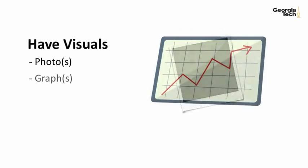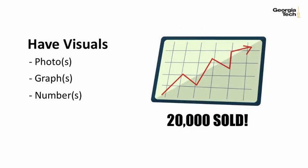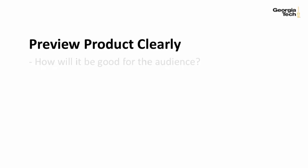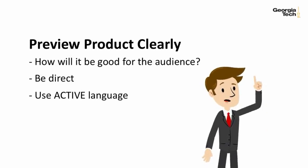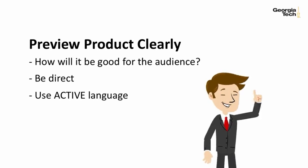Include a strong visual — a photo, a graph, a number — that will help your audience connect to you and your product. Next, preview clearly and simply what your product or service is and how it's right for the audience. Be direct and get straight to the point. Use active language and state clearly what you have to offer. At the end of your introduction, your audience should know what the product is and what they are going to learn about, and most of all, they should feel connected to you and want to know more.